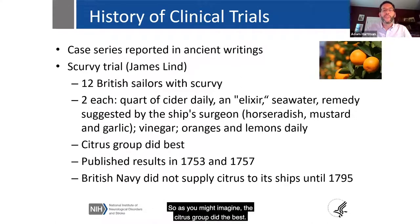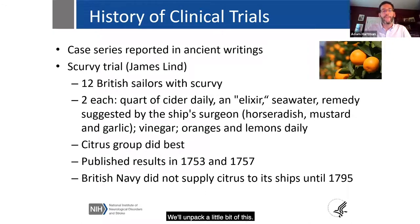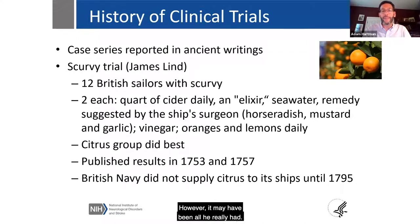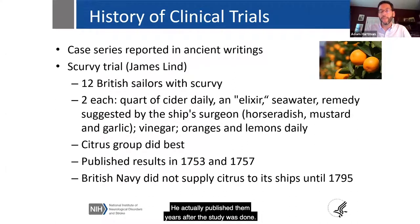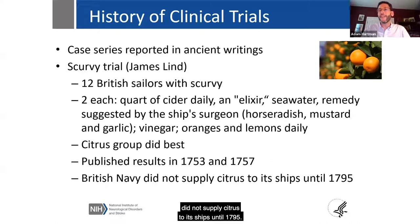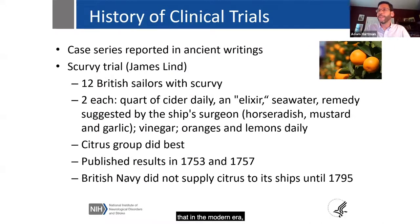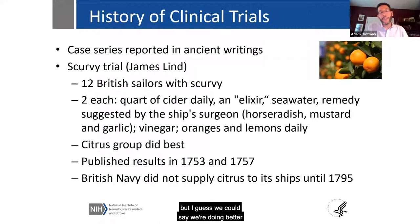As you might imagine, the citrus group did the best. You can criticize this trial — having two people per group may not have been the most effective approach, though it may have been all he had. His results were published in 1753 and 1757, years after the study was done. Interestingly, the British Navy did not supply citrus to its ships until 1795. This illustrates that it can take about 15 years from a pivotal clinical trial finding to implementation in clinical practice — and at least we're doing better than the 1700s.